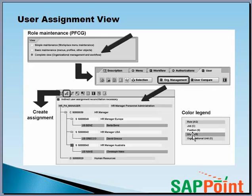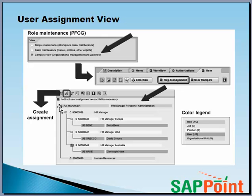We have to maintain infotype 105, where we link the partner to the user ID. Then the position is related to the user. For example, position 54504 is related to user BNZ, and position 42 is related to David Greco. This link has to be made — every user needs to have a partner, and that link between the partner and the user ID is maintained in infotype 105. You can define the relationship such as positions, jobs, or org units when you choose the create assignment option.